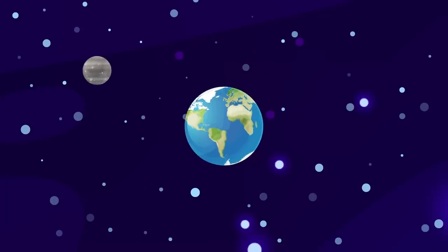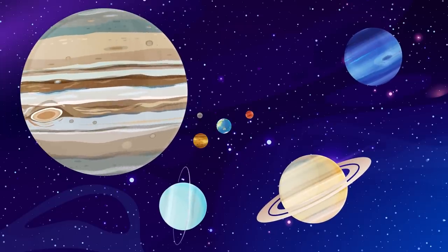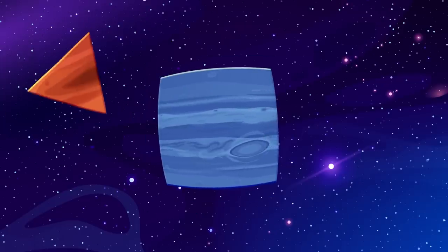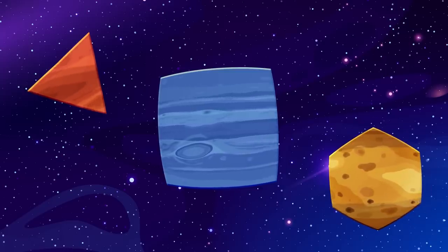But no matter the difference, each and every planet we've ever found in our solar system or anywhere else in the galaxy are all round. What's the deal? Why can't planets be any other shape? Well, it has to do with how planets are formed.